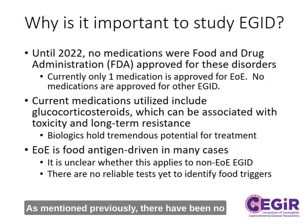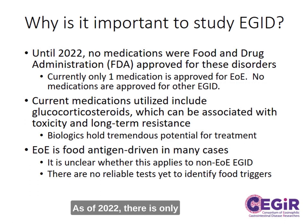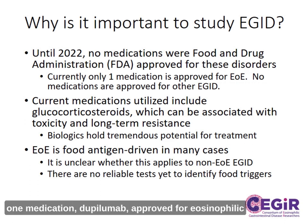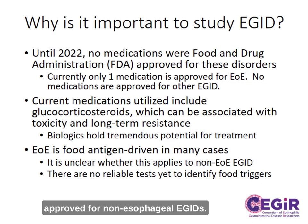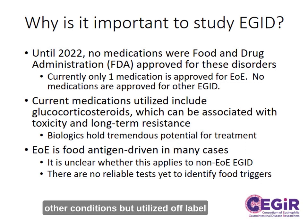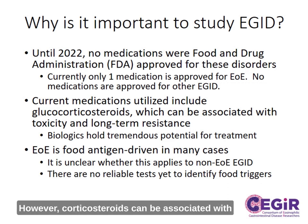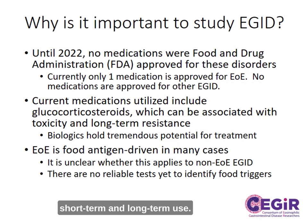There have been no FDA-approved medications for EGIDs until recently. As of 2022, there is only one medication, dupilumab, approved for eosinophilic esophagitis, the most common EGID. However, there are no medications approved for non-esophageal EGIDs. Other medications approved for other conditions but utilized off-label for EGID include corticosteroids. However, corticosteroids can be associated with dependency, resistance, and toxicity with both short-term and long-term use.